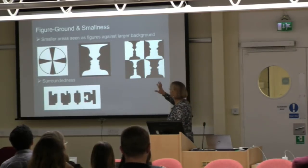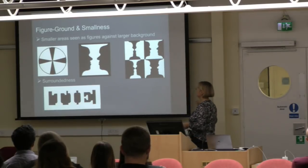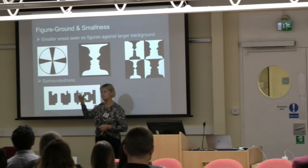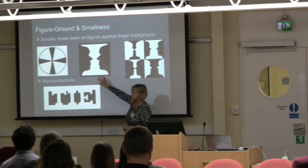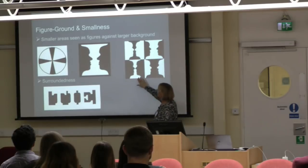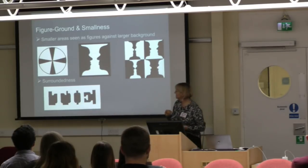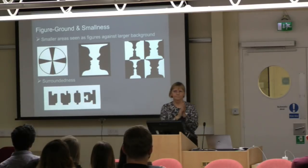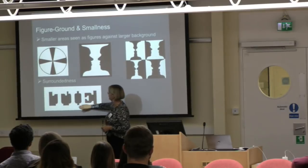We've also got the idea of figure-ground and smallness. Small areas tend to be seen as figures against a larger background. In one example, you tend to see a black fan rather than seeing the white shape as the image. When the sizes become more equal, there's conflict between which is figure and which is ground. The idea of surroundingness — once you spot a barrier around an area, you can actually see the word 'time' written there. There are all these different perceptual effects happening all the time.